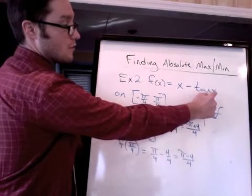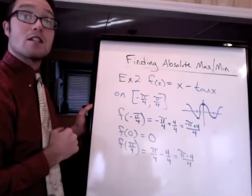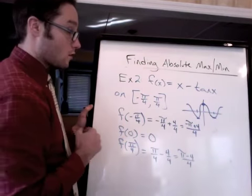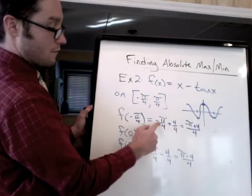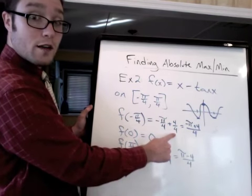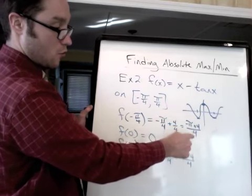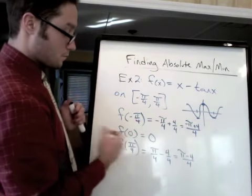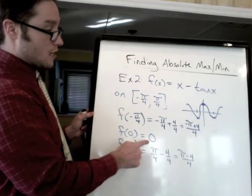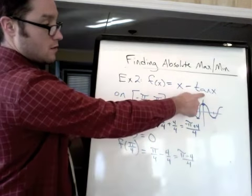So if you plug in negative pi over 4, you get negative pi over 4 minus the tan of negative pi over 4, which is negative 1. If you look at your unit circle, so minus negative 1 means plus 1. So here's what I have. Negative pi over 4 plus 1. And with a common denominator, that's negative pi plus 4 over 4. Plug in 0, you get 0. 0 minus tan of 0 is 0.